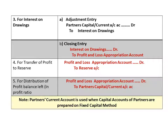For interest on drawings, the entries are opposite to interest on capital. The adjustment entry goes in the capital account on the debit side: partners' capital or current accounts debit to interest on drawings. The closing entry goes into the P&L appropriation account — since interest on drawings comes on the credit side of P&L appropriation account, the entry is interest on drawings account debit to profit and loss appropriation account. For transfer of profit to reserve, there is only one entry on the debit side of P&L appropriation account: profit and loss appropriation account debit to reserve account.